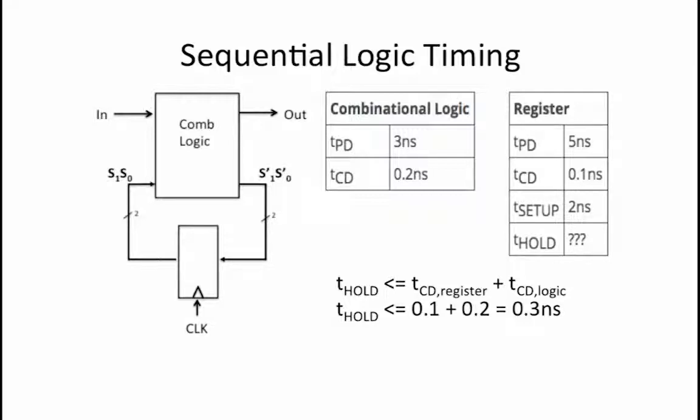What is the smallest value for the period of the clock that will meet the timing specifications? The clock period must be long enough for the data to pass through the entire circuit and be ready and stable for tsetup before the next period begins.